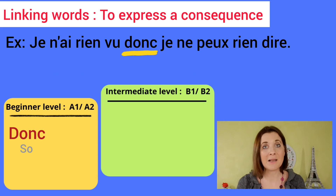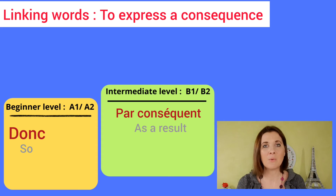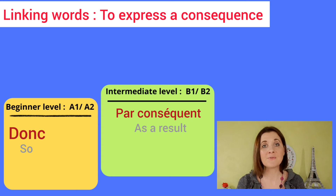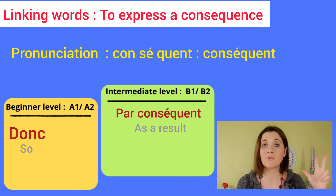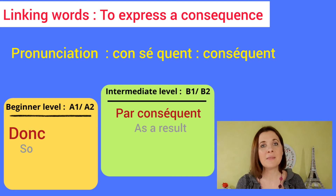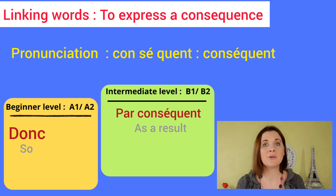Intermediate level: we have par conséquent, meaning 'as a result.' To pronounce this word, cut it in three parts: con-sé-quent. Now say it in four: con-sé-quent.